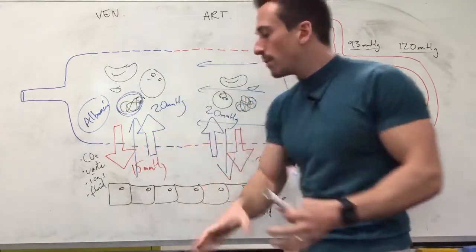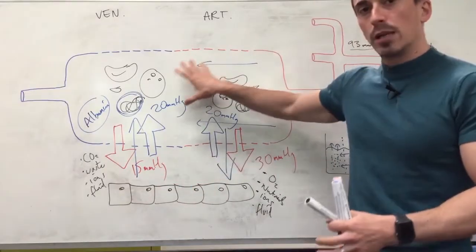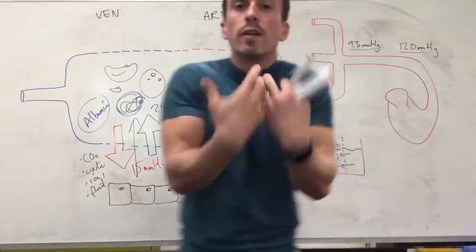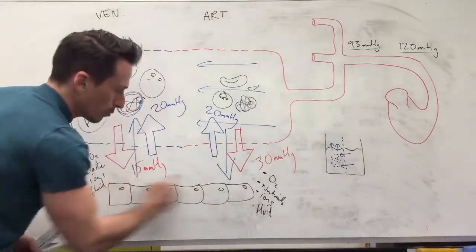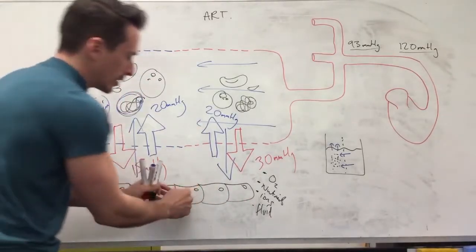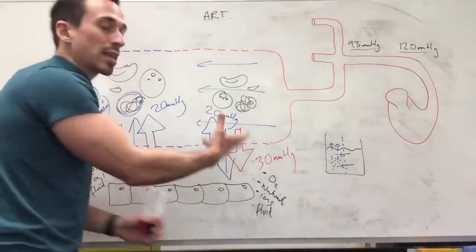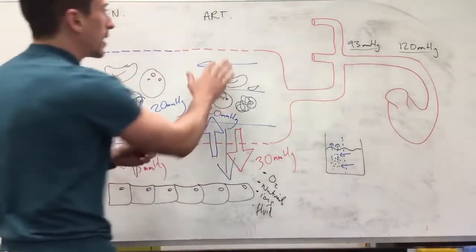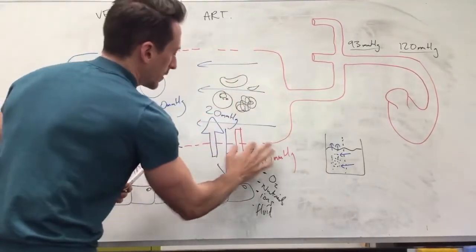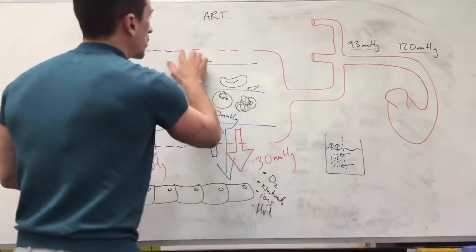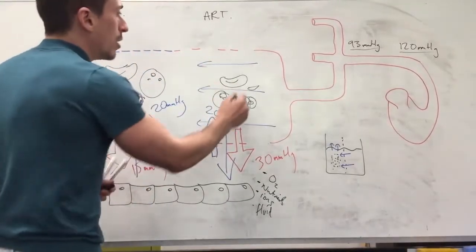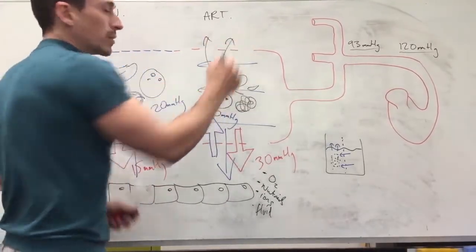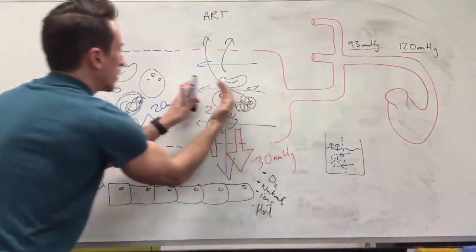Now when you have some sort of inflammatory response, let's just say at this tissue, it damages the tissues, the cells burst, they release chemicals like histamine. What histamine does is it makes the holes at the venous end a lot larger. Now if these holes are larger, that means now the proteins and the cells can leak out.